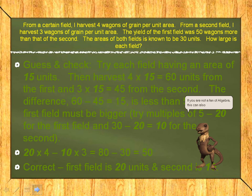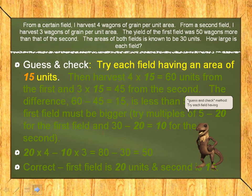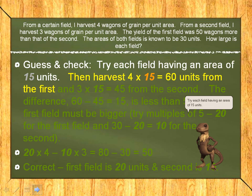If you are not a fan of algebra, this can also be done by a guess and check method. Try each field having an area of 15 units. Then harvest four times 15 equals 60 units from the first and three times 15 equals 45 from the second.